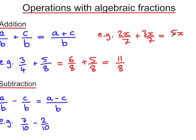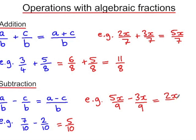Similarly with subtraction, 7 tenths take 2 tenths is 5 tenths. As long as the denominators are the same, then we can subtract the numerators. An algebraic example: 5x over 9 take 3x over 9 is 2x over 9.